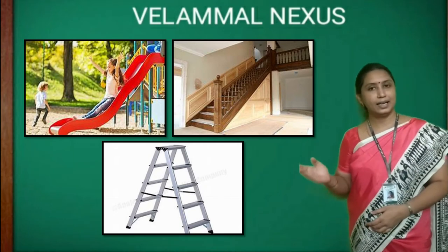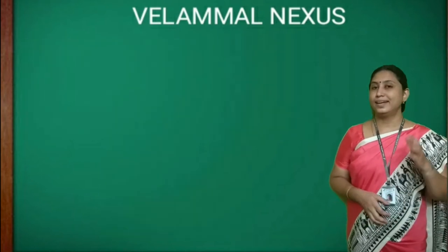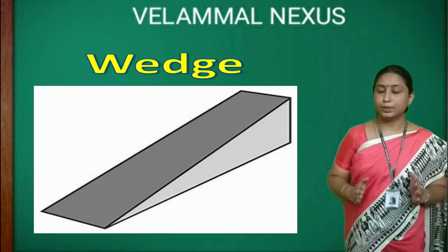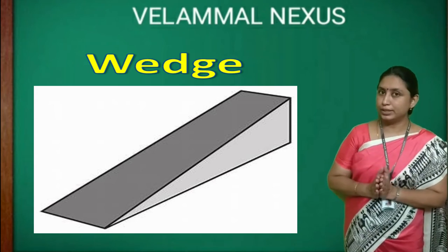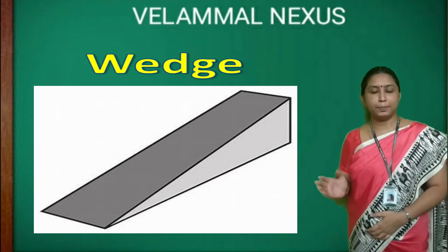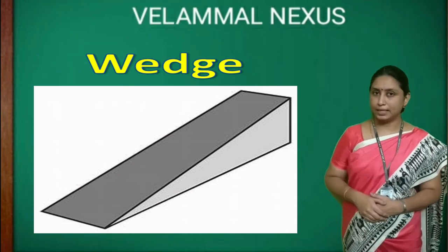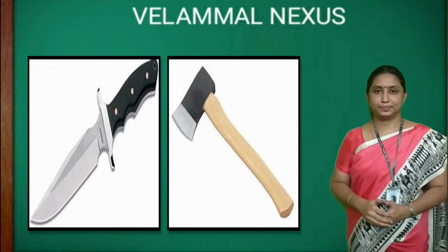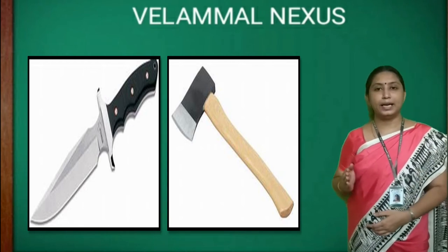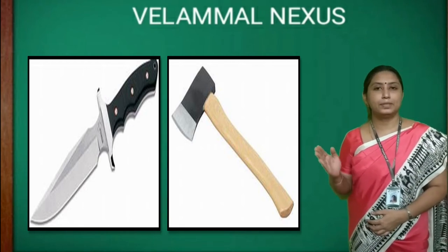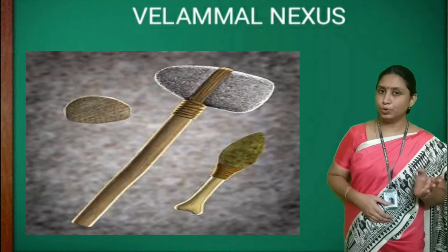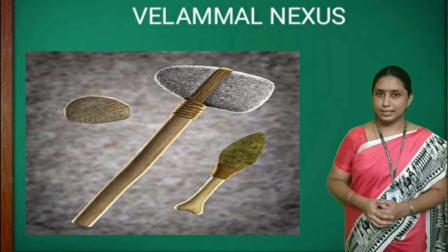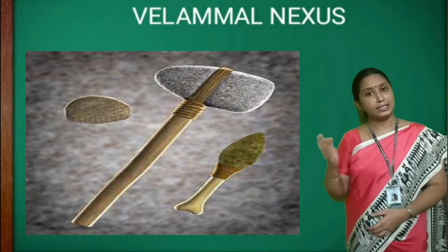Other examples of inclined planes are a slide in a playground, a staircase, and a ladder. The next simple machine is a wedge. A wedge is formed when two inclined planes are joined together such that one end is sharp and the other end is blunt. It is used to cut or slice objects. The head of an axe and the blade of a knife are examples of a wedge. Interestingly, the wedge is the oldest simple machine, made by our ancestors at least 1.2 million years ago to make stone tools.